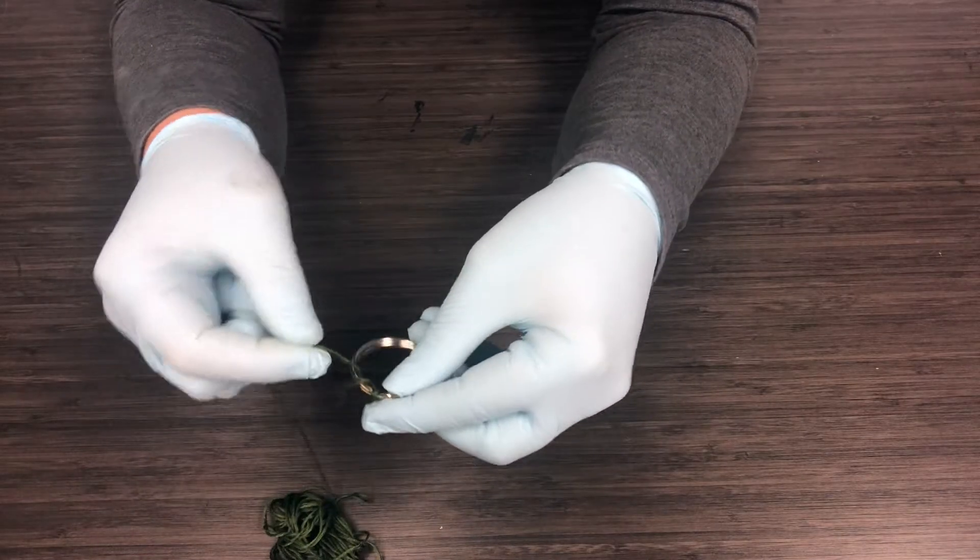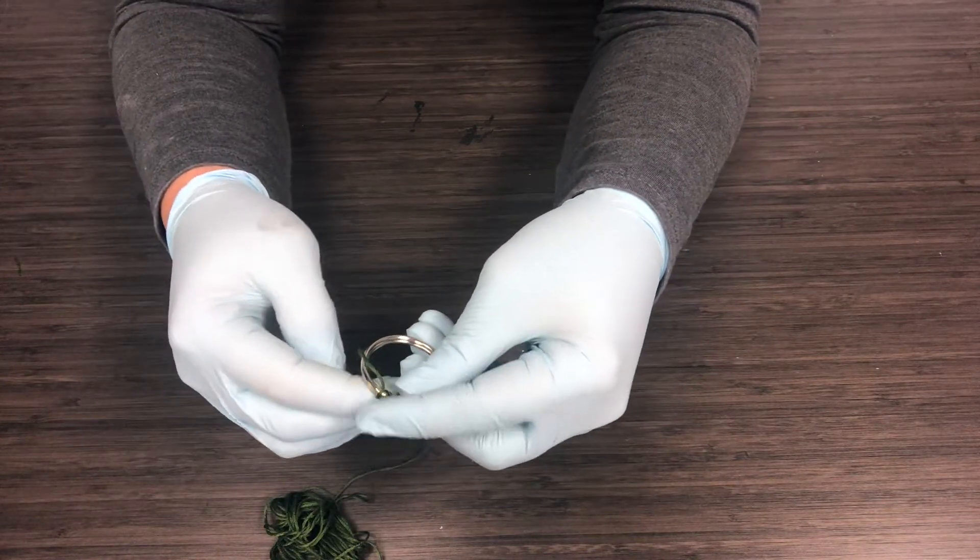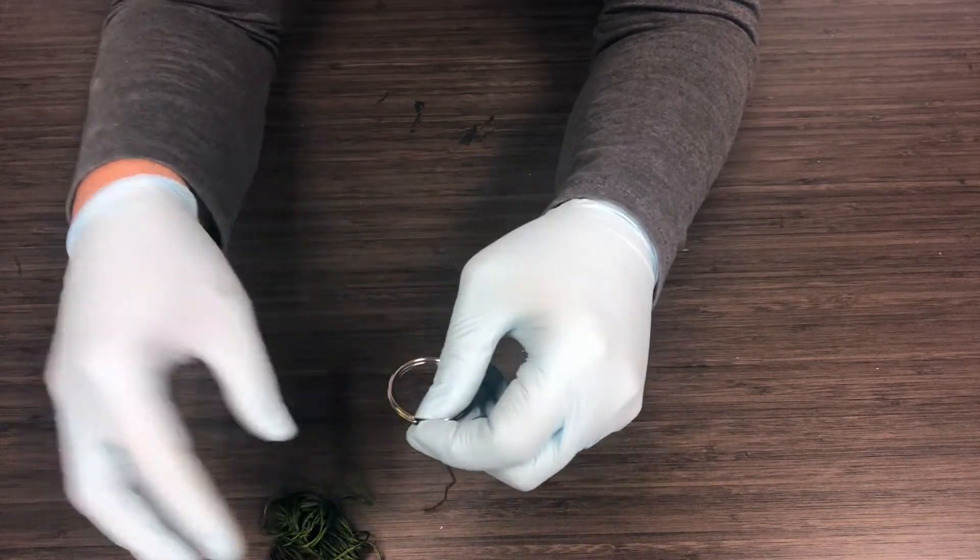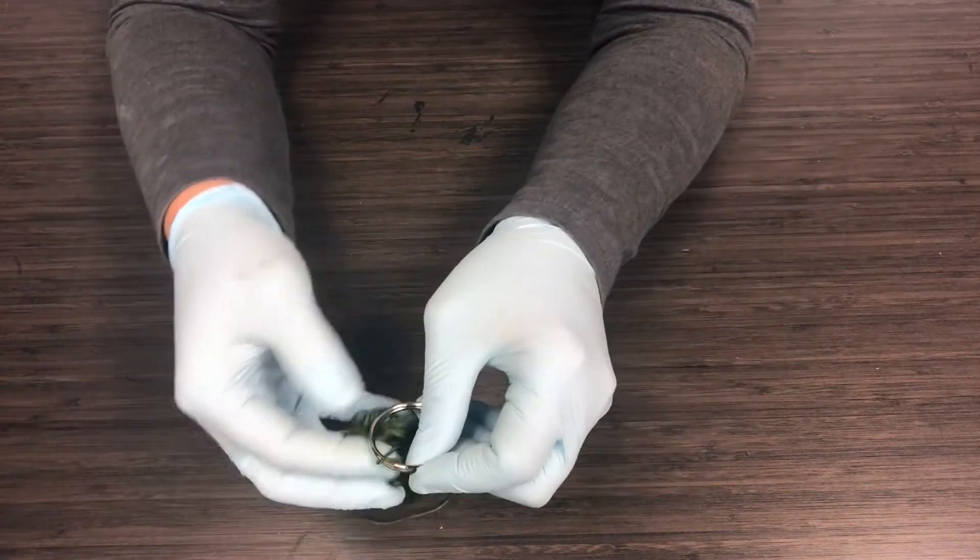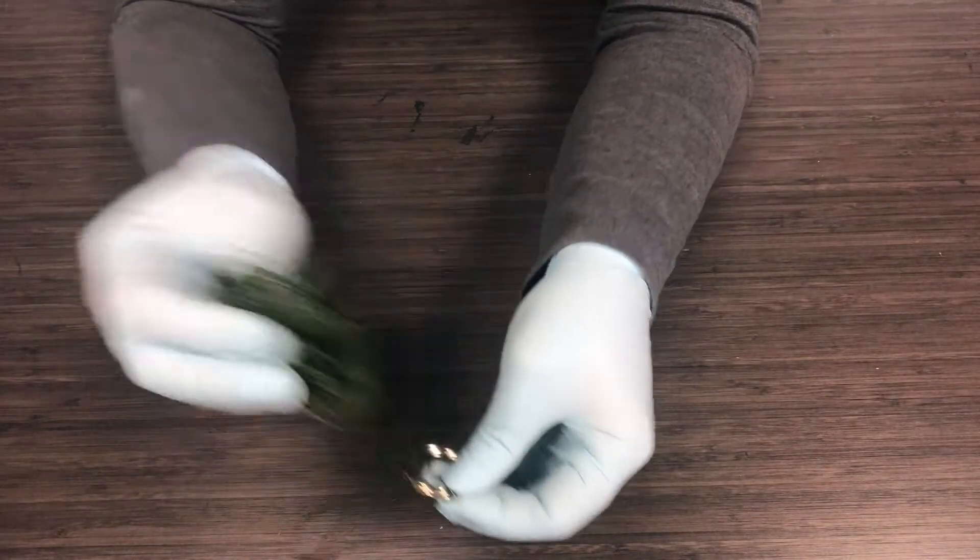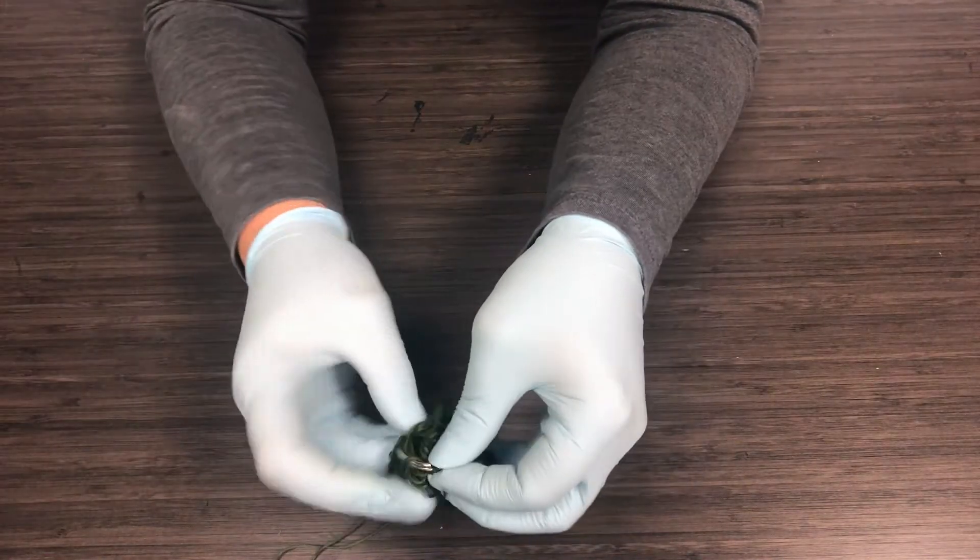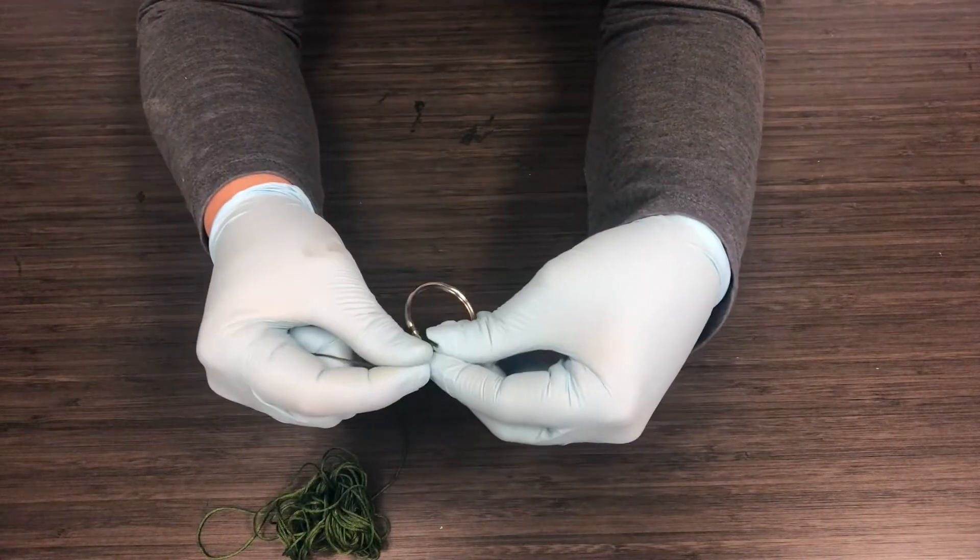Okay, the first step is you're going to tie your embroidery string on. Don't be so picky about how you tie it on, it doesn't really matter as long as it stays. And then you go around and around and around until your whole ring is covered.